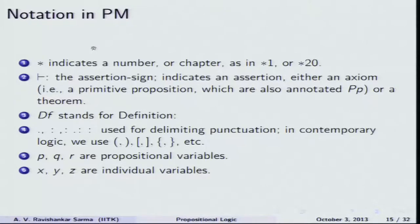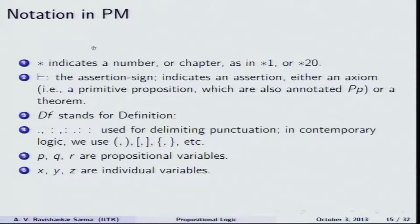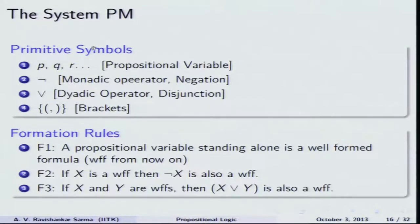As usual, P, Q, R, etc. are propositional variables; there are infinitely many such variables — P1, P2, P3, and so on. Individual variables such as X, Y, Z represent propositional variables or individual names. This axiomatic system due to Russell and Whitehead is also called PM — Principia Mathematica.